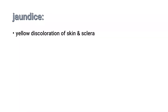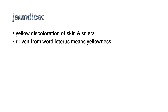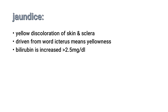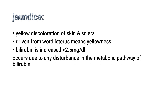Jaundice is a yellow discoloration of skin and sclera. It is derived from the word 'icterus' that means yellowness. In this condition, bilirubin is increased — that is, almost greater than 2.5 milligram per deciliter in your plasma. It occurs due to any disturbance in the metabolic pathway of bilirubin.